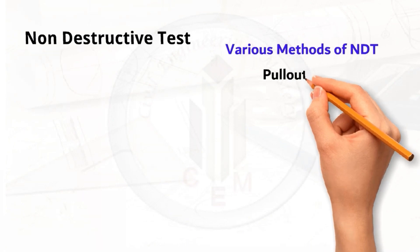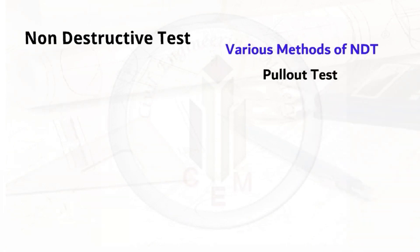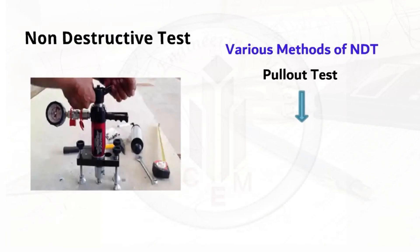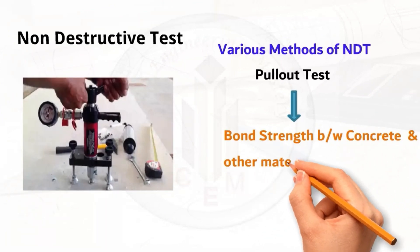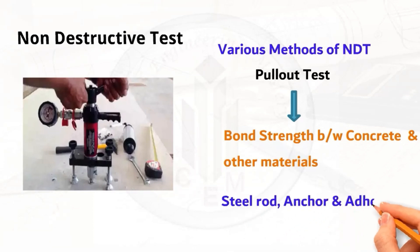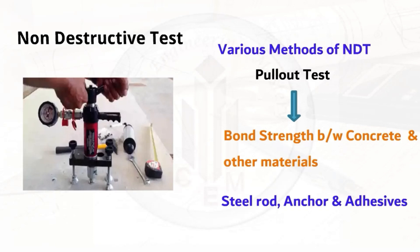The next method is the pullout test. This is a simple test used to measure the bond strength between concrete and other materials such as steel rods, anchors, and aggregates. The test is conducted by inserting a disc or ring into the concrete, then applying tensile force gradually to pull out the disc or ring. The force required to pull it out is the measure of the bond strength, making it a valuable tool for assessing bond strength of concrete.